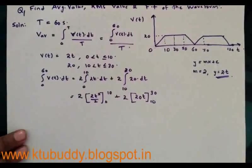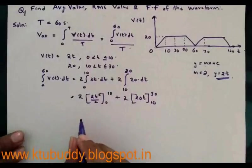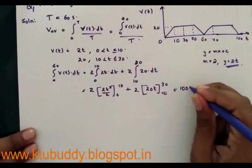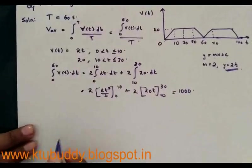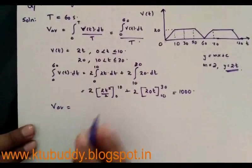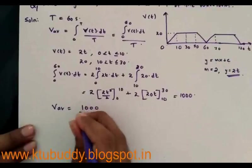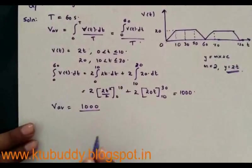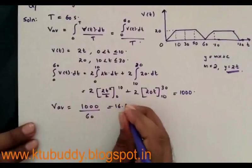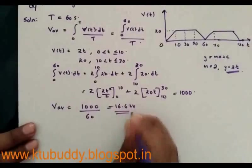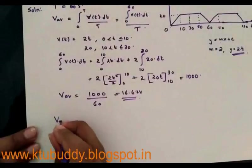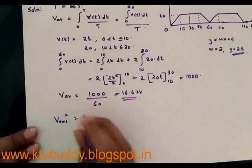This total area of the trapezoidal waveform equals 1000. The average value is obtained by dividing by the time period 60. Therefore, V_average = 1000 / 60 = 16.67 volts.